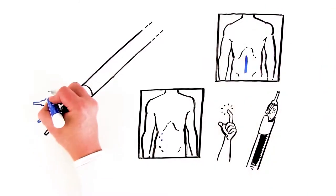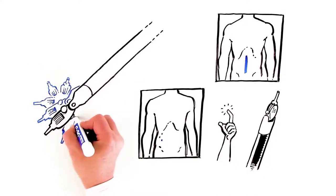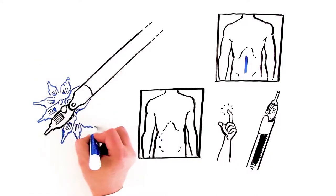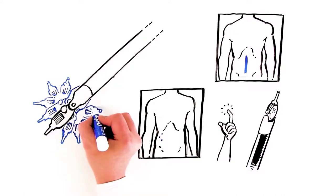Through these smaller openings, your surgeon will perform the surgery using a camera and long, thin instruments that can move like a human wrist.